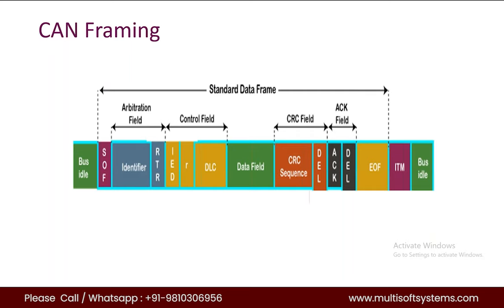The sender computes the CRC before sending the data. The receiver also computes CRC on its side and then compares. If what the sender calculated and what the receiver calculated do not match, the receiver will generate an error. That is how the CRC field works. After that we have the acknowledgement field.